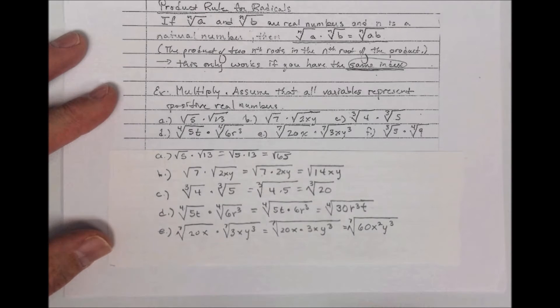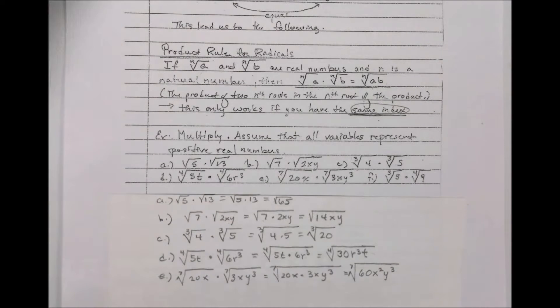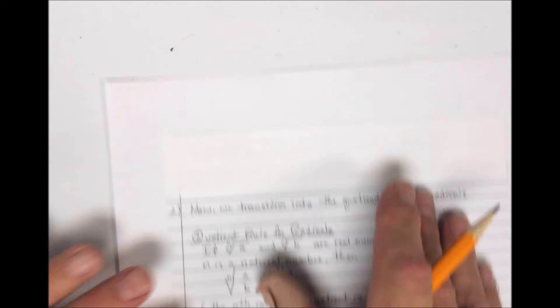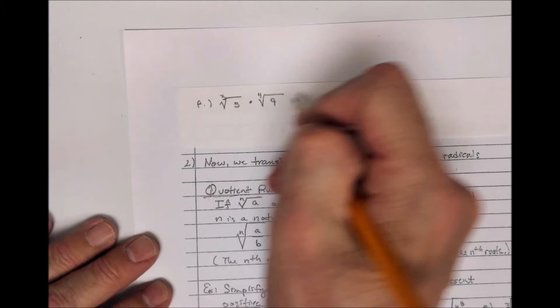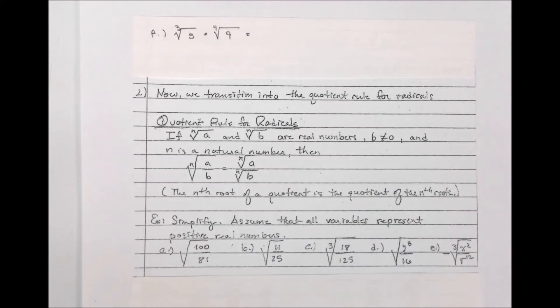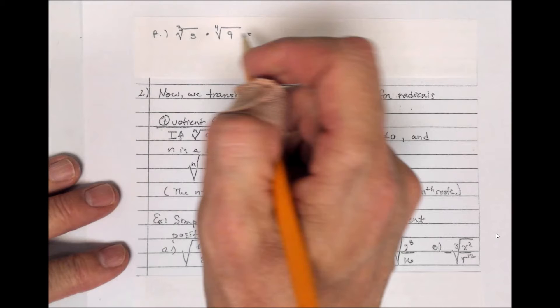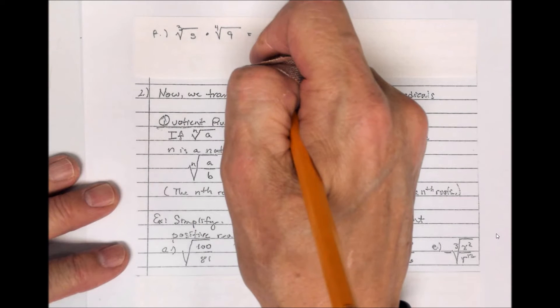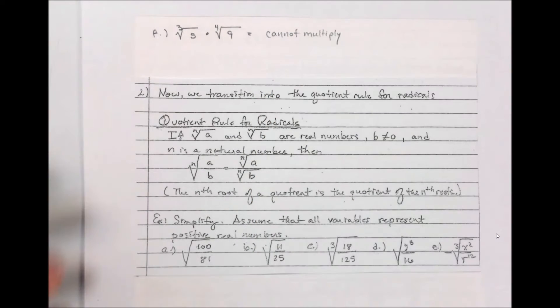For part F, the cube root of 5 times the 4th root of 9: in this case, you cannot multiply these in this form because the product rule for radicals doesn't apply — you have different indices. Cannot multiply.